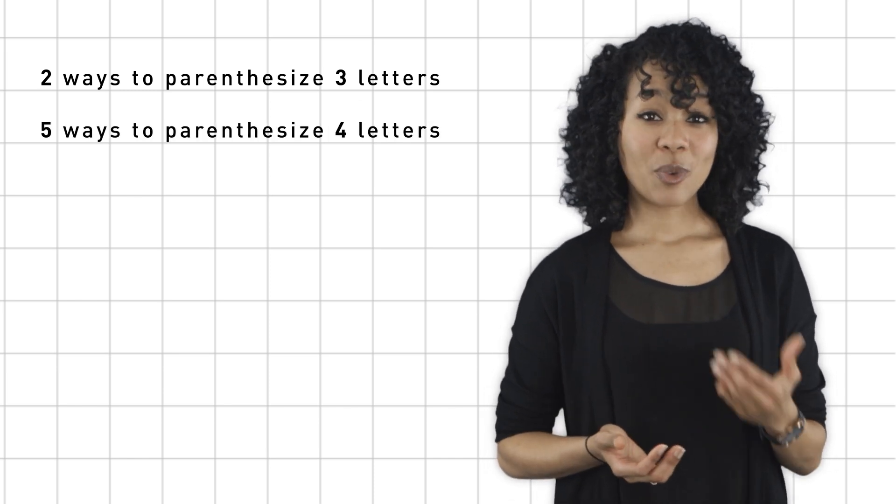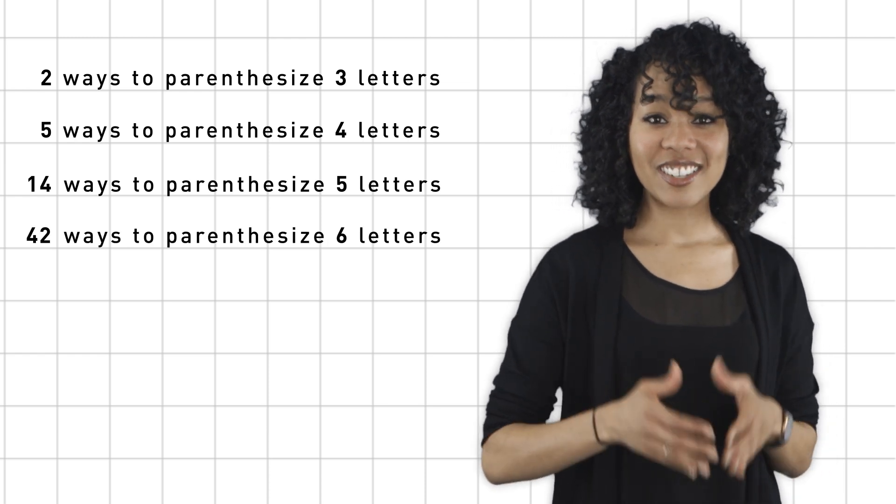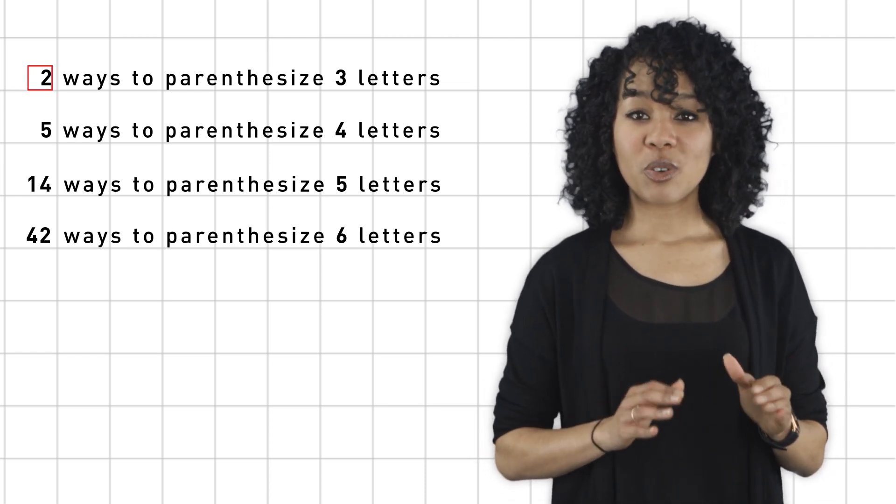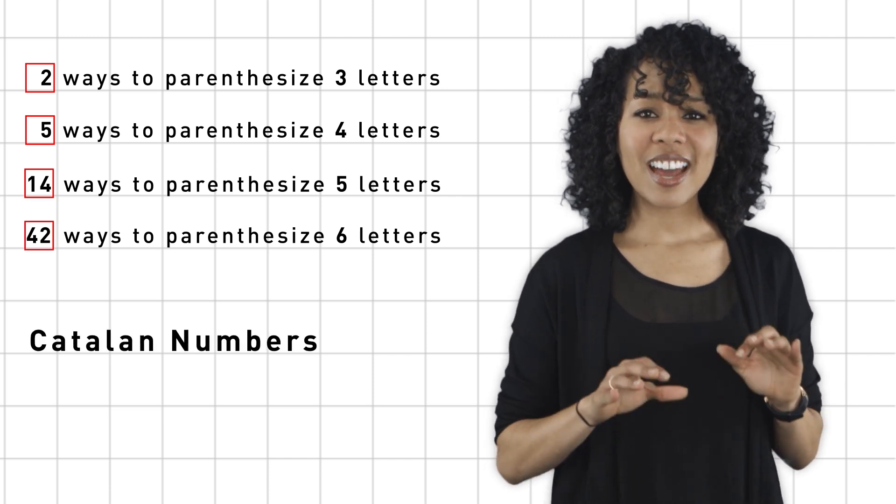14 ways to parenthesize five letters, 42 ways to parenthesize six letters, and so on. These numbers, 2, 5, 14, 42, are called the Catalan numbers, and they show up a lot in mathematics. In fact, combinatorialist Richard Stanley wrote a book, appropriately called Catalan Numbers, which contains over 200 examples of where this special sequence shows up.